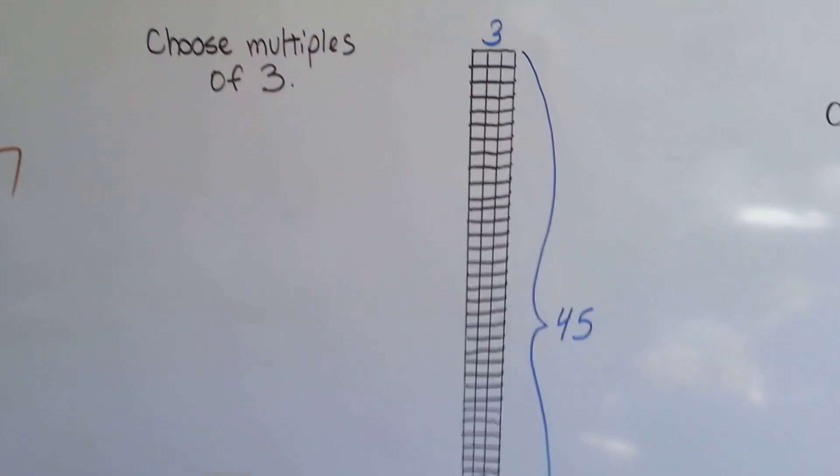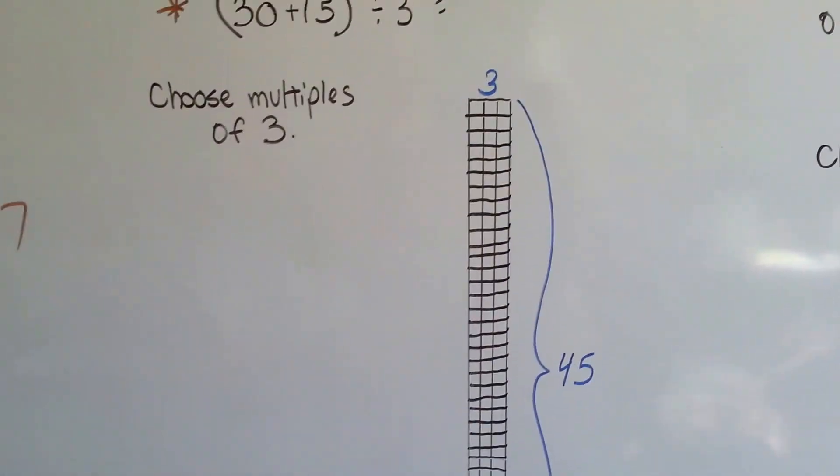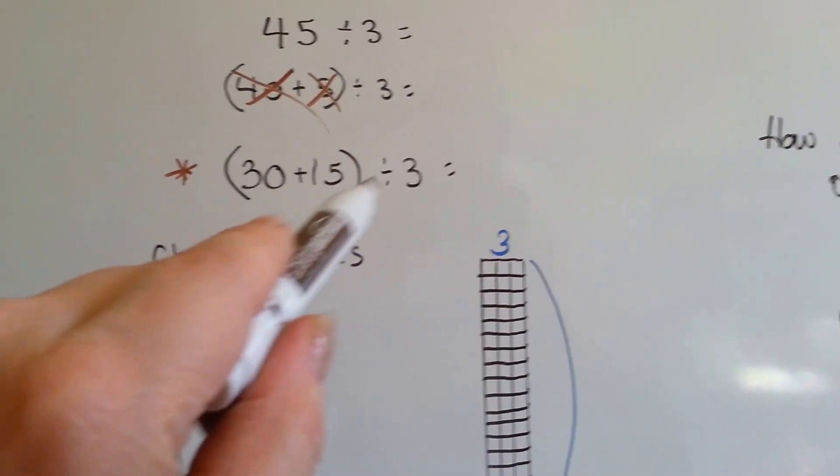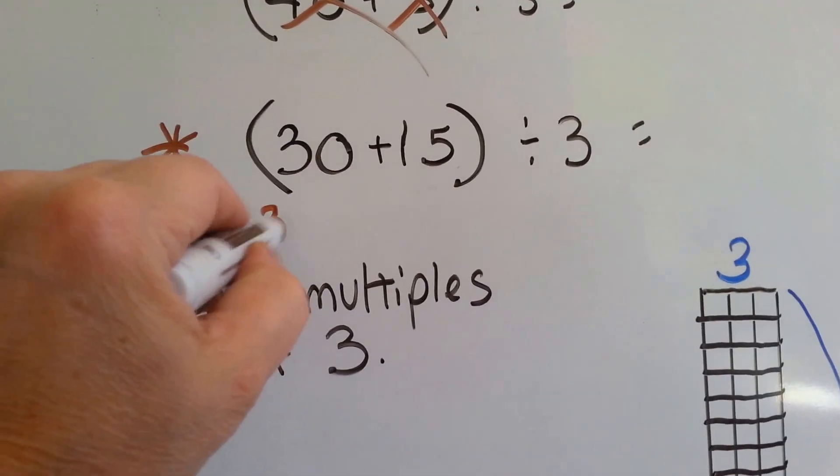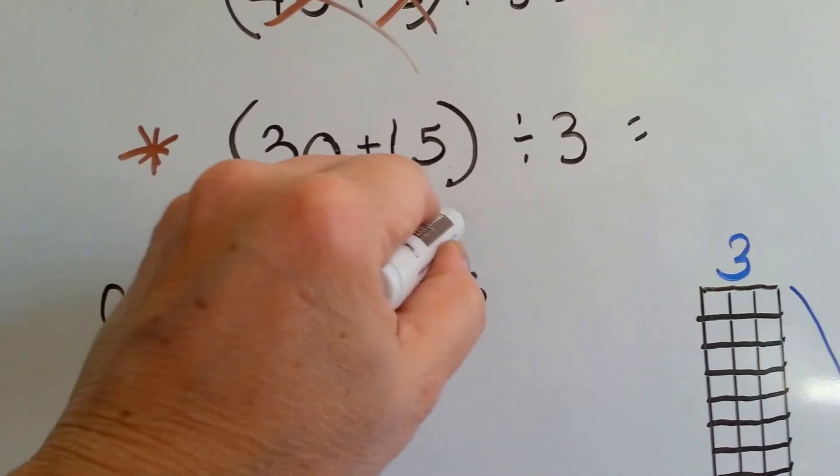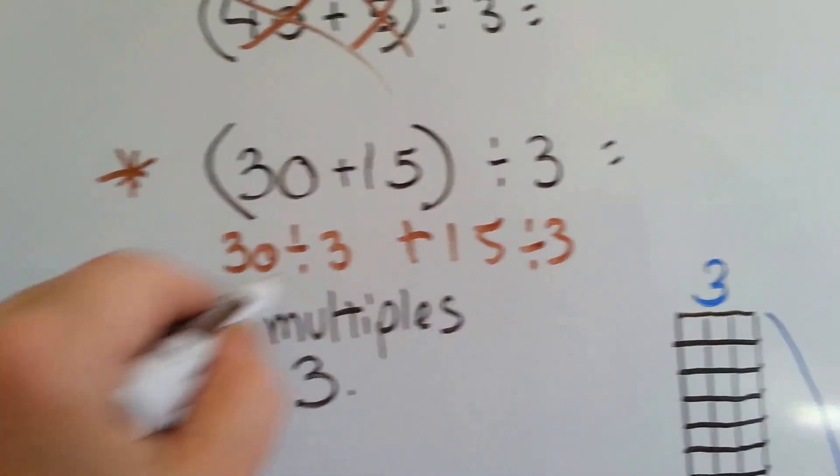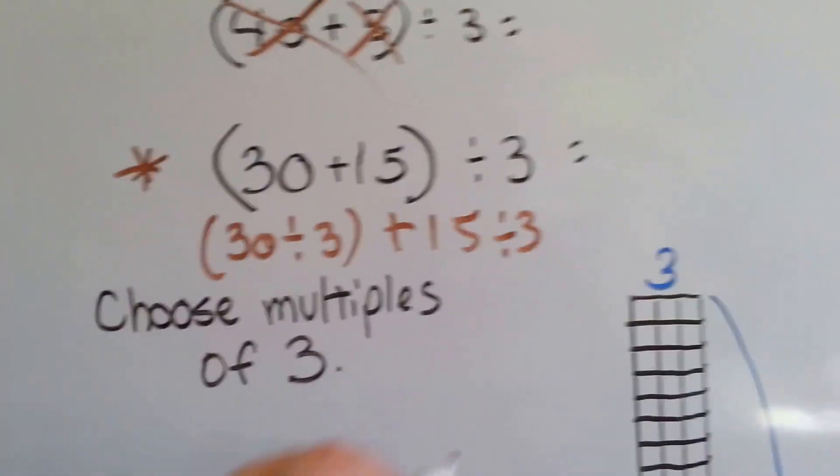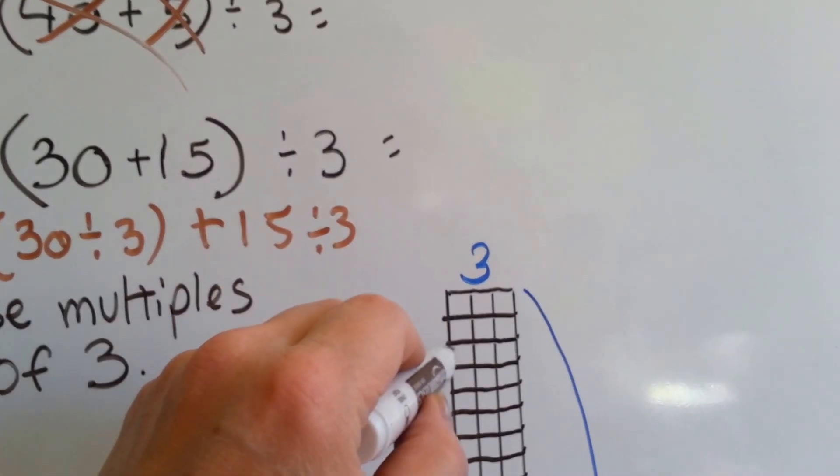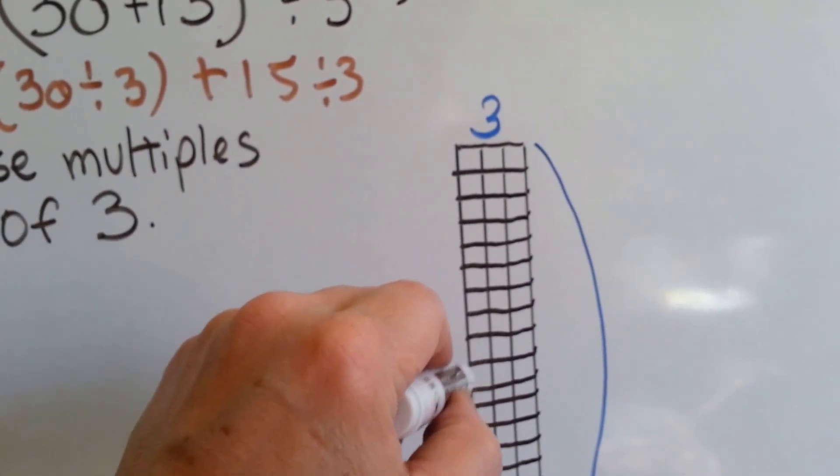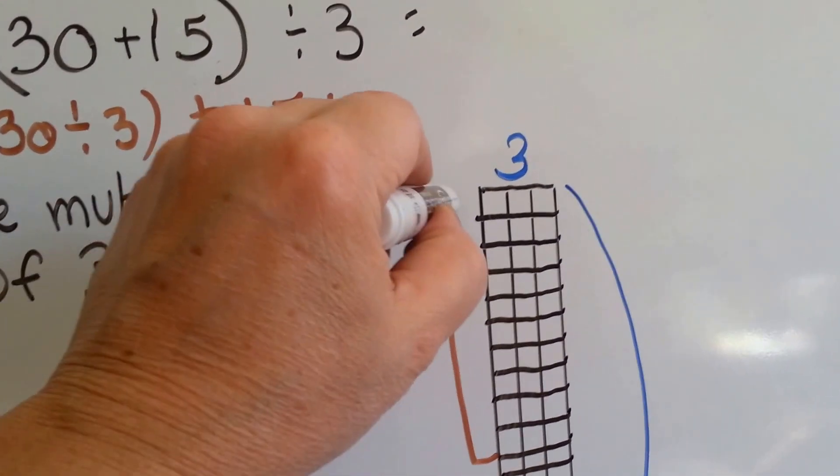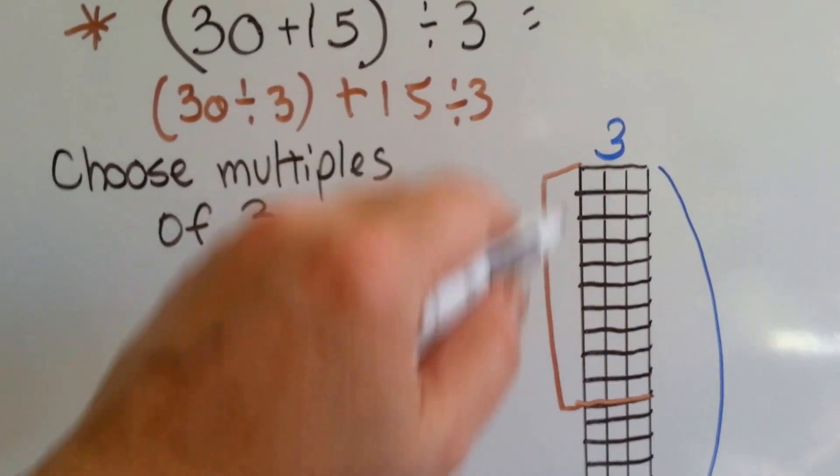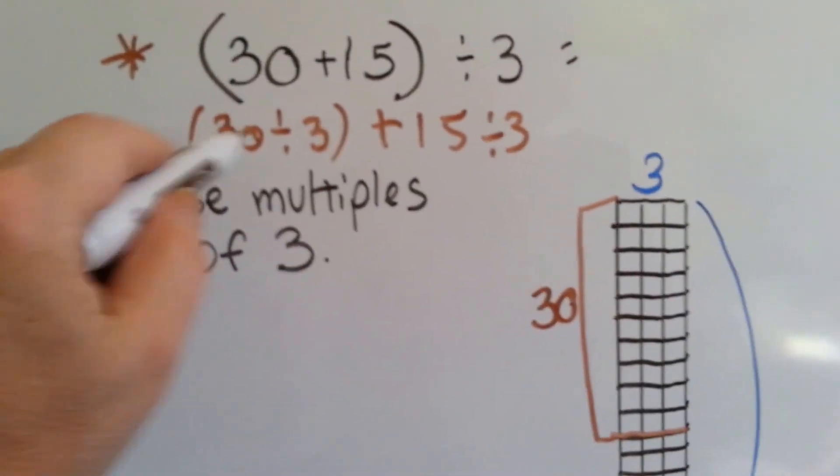If we had 45 little squares here, and we wanted to break it apart, we could do it in 30 plus 15. 30 divided by 3 plus 15 divided by 3. What's 30 divided by 3? Do you know? 3 times what is 30? 10. So we'd find 10 of these: 1, 2, 3, 4, 5, 6, 7, 8, 9, 10 right here. That's 30.